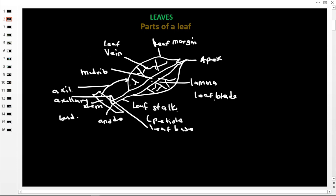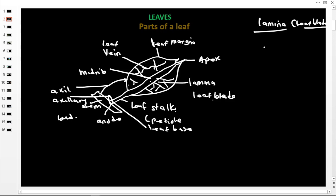Let us name the leaf parts once again: the midrib, the leaf vein, the margin, the apex, the lamina or leaf blade, the leaf stalk or petiole, the leaf base, the node, the stem, and the axil. Now let us look at how important these parts are. The lamina is also called the leaf blade.